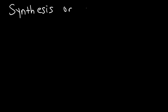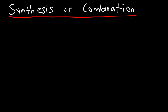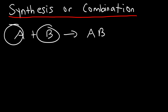The next kind of reaction you need to know is a synthesis reaction, also called a combination reaction. In a synthesis or combination reaction, you're combining two smaller things to make something larger. It can be an element reacting with another element to produce a compound, or two compounds coming together to form a larger compound. You're taking two small things and combining them — essentially combining A and B to make AB.